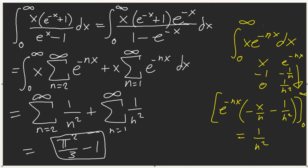This is π²/6, and this is π²/6 minus 1. So the answer is π²/3 minus 1. You can take advantage of the initial values and make your integrals a lot simpler to deal with — it helps you solve the integral faster and prevents mistakes.